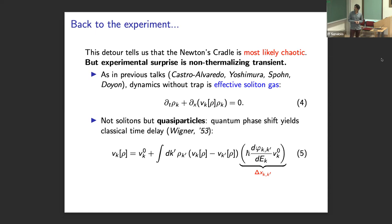So now I'm going to go back to how we understand this non-thermalizing transient. And as we've heard in these four previous talks, the effective dynamics without a trap, when we just have Lieb-Liniger, is described by an effective soliton gas, where in the quantum case you don't have solitons, but you have quasi-particles. And the quantum phase shift gives you a classical time delay by this analysis of Wigner from the 50s.